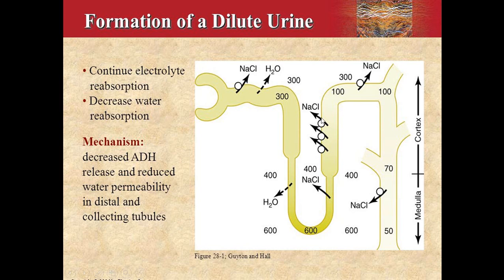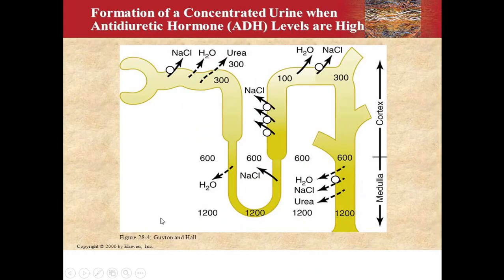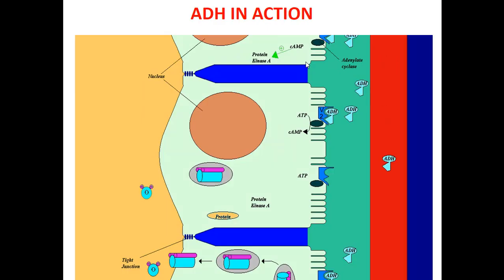Here the diagram shows how you produce dilute urine: dilute urine means no ADH or less ADH. When there is less ADH, there is no water reabsorption, and the filtrate coming out having 100 osmolality remains the same. The mechanism is: decrease in ADH release → reduced water permeability in the distal and collecting ducts → dilute urine. For concentrated urine, you need more ADH — here you can see ADH levels are high, causing more and more reabsorption, with one arrow representing aldosterone and the other arrow representing the effect of ADH.